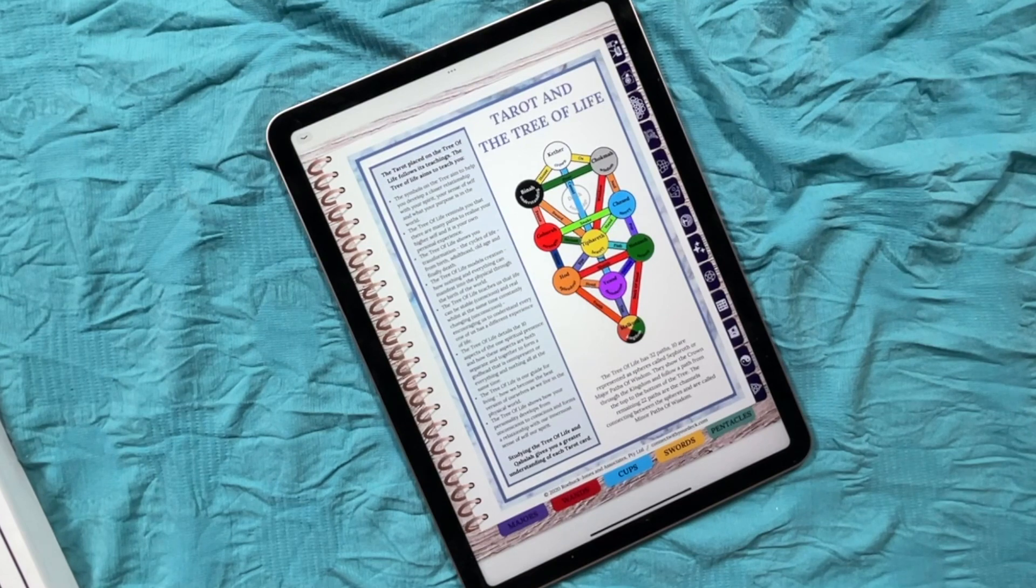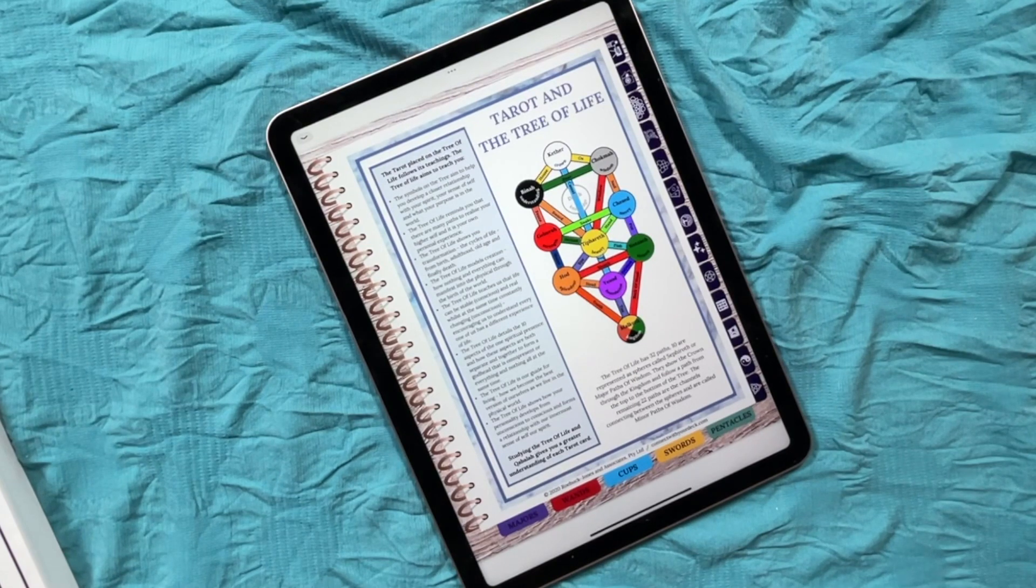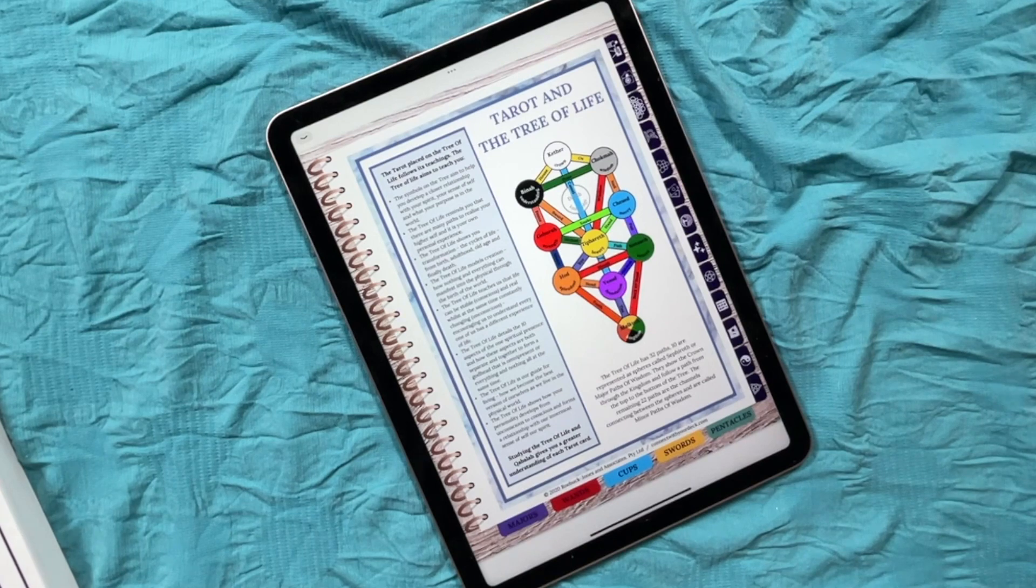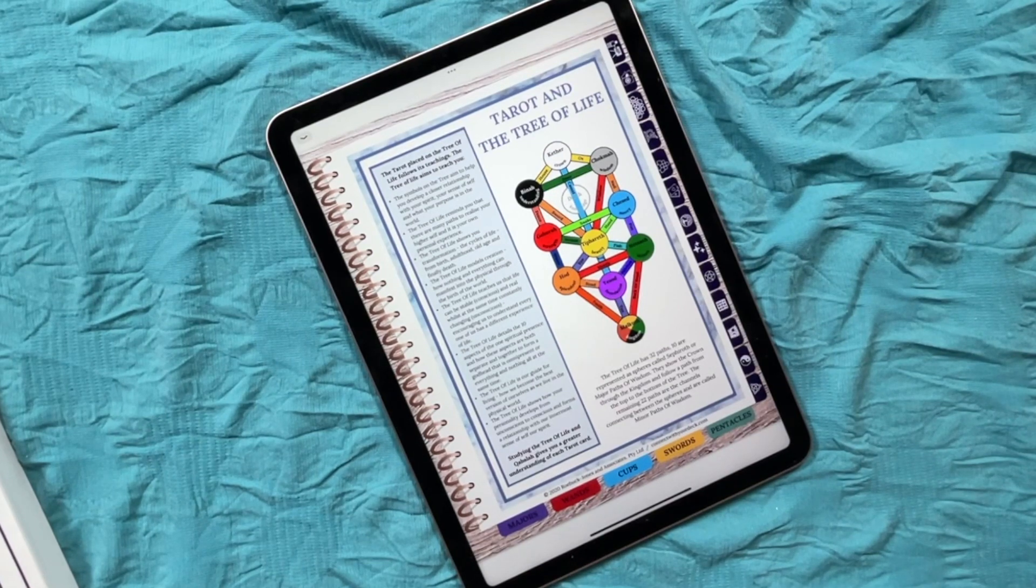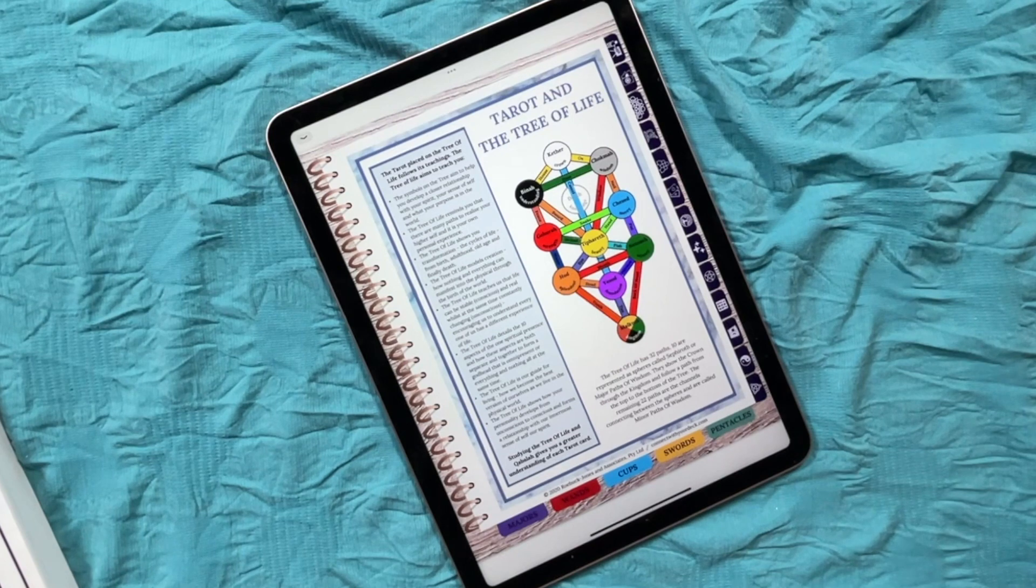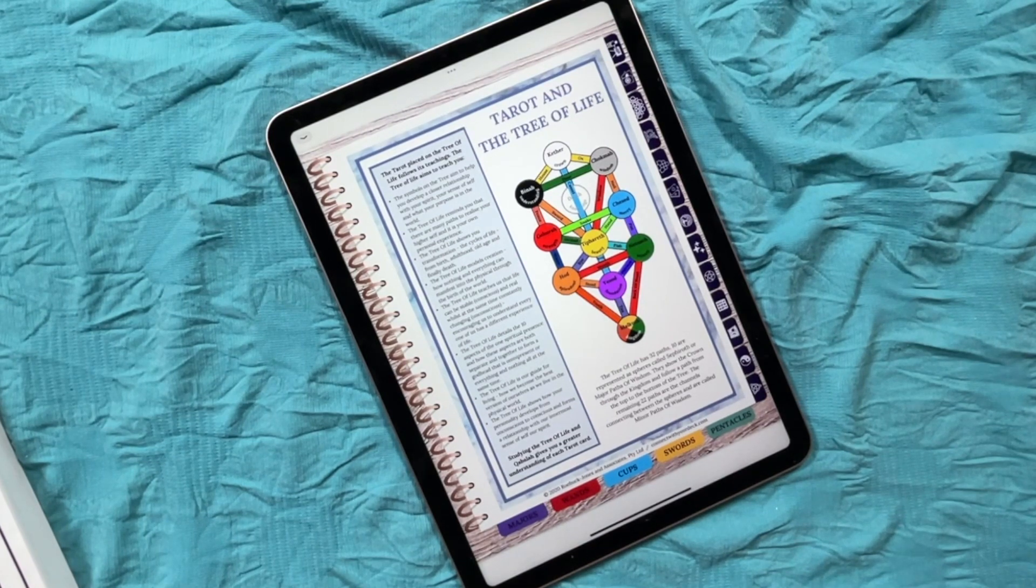The Tree of Life details the 10 aspects of one's spiritual presence and how these aspects are both separate and together to form a Godhead that is omnipresent or everything and nothing all at the same time. So think universal energy, spirit, God, whatever you want to call it, it's a description of that greater energy. The Tree of Life is our guide for living how we become the best version of ourselves as we live in the physical world. It's this idea of all religions having this moral code.